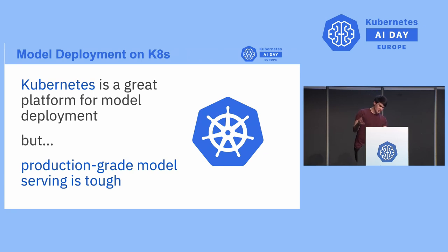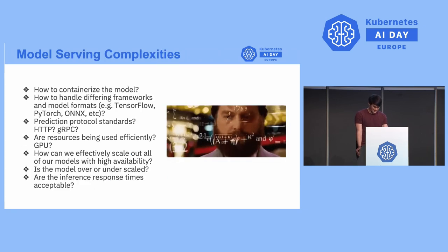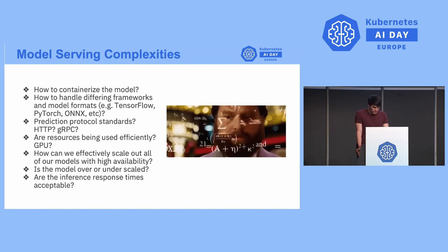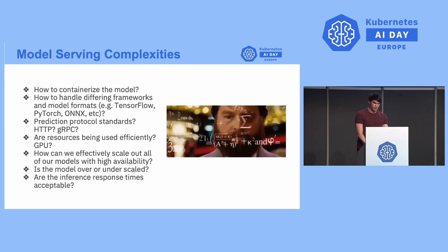Even with all this, getting production-grade model-serving is tough — there are additional complexities to be wary of. There are quite many things to consider, especially when dealing with a variety of frameworks. You have to know how to containerize them for Kubernetes, how to deploy them, how inference requests should be formatted, and of course making sure inference response times are acceptable, especially when deploying at scale.